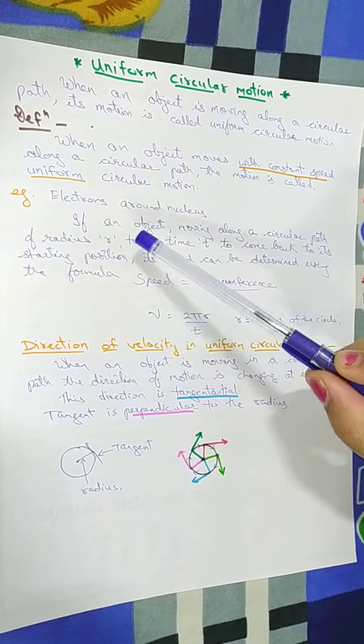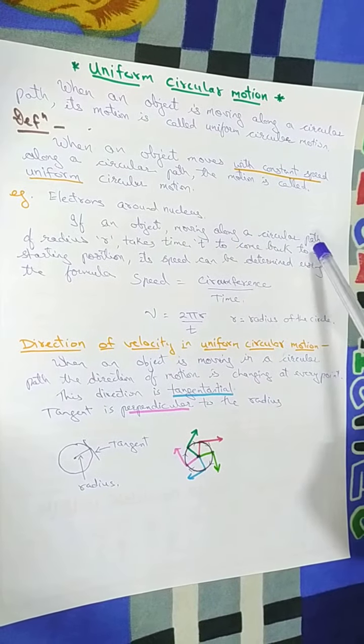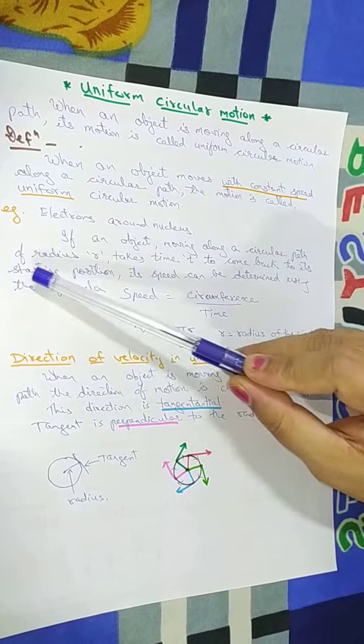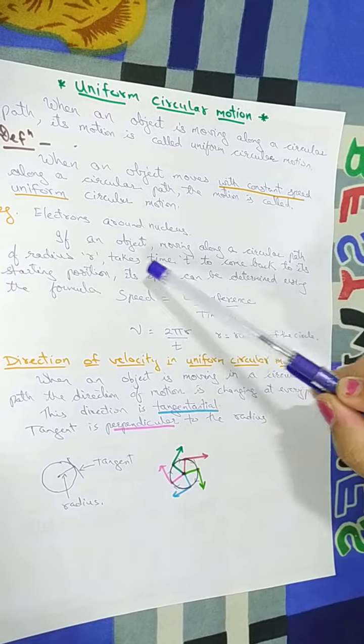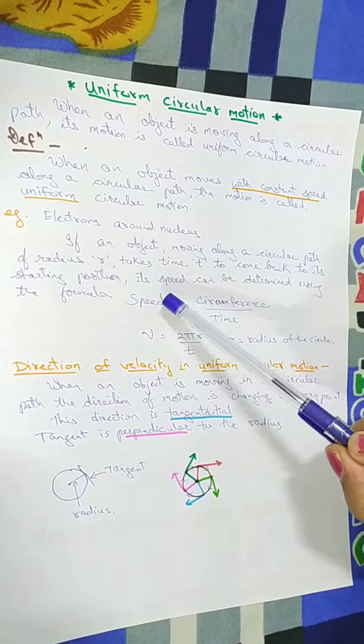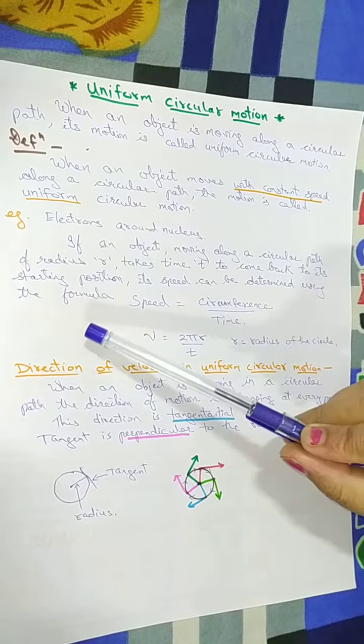Now if an object is moving along a circular path, it has some radius, let that radius be r and the time taken is t to come back to its starting position. Its speed can be determined by using the formula.